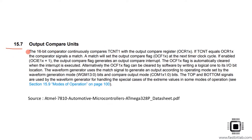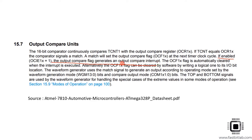You can explore the Output Compare Units section in the datasheet. The 16-bit comparator continuously compares T-count1 with the Output Compare Register A or B. If T-count equals the OCR1 register, the comparator signals a match, which sets the output compare flag at the next timer clock cycle. If enabled, the output compare flag generates an output compare interrupt. We have to implement the ISR for the output compare interrupt.